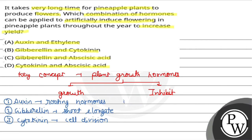The fourth hormone is abscisic acid. Abscisic acid is a stress hormone — it acts under stress conditions, such as when water concentration is less. It is also involved in seed dormancy; if the environment is not favorable, the seed will remain dormant. It is related to seed development and can inhibit seed germination.